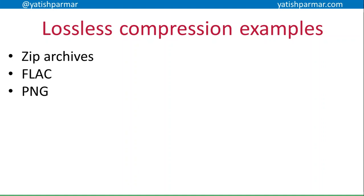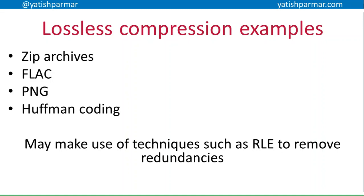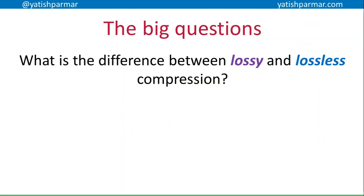Examples of lossless compression include: ZIP archives, FLAC (the Free Lossless Audio Codec), PNGs (Portable Network Graphics) which are lossless, and Huffman coding — which you may be learning as part of the course — a form of compressing text by generating codes for the characters in a document. Some of those techniques may also make use of run-length encoding to remove redundancies and compress the data further.